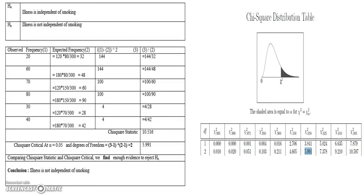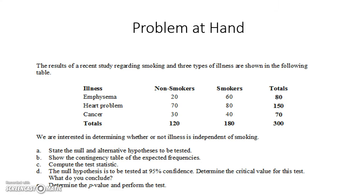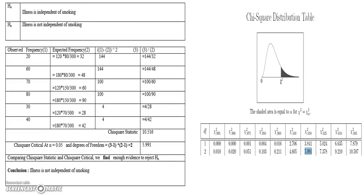So the expected frequency for non-smokers with emphysema is 120 × 80 / 300. Similarly, we calculate the expected frequency for all other sections. For example, for the section of emphysema and smokers, the observed frequency is 60, and the expected frequency would be the column total (180) × row total (80) divided by the grand total, giving 180 × 80 / 300.